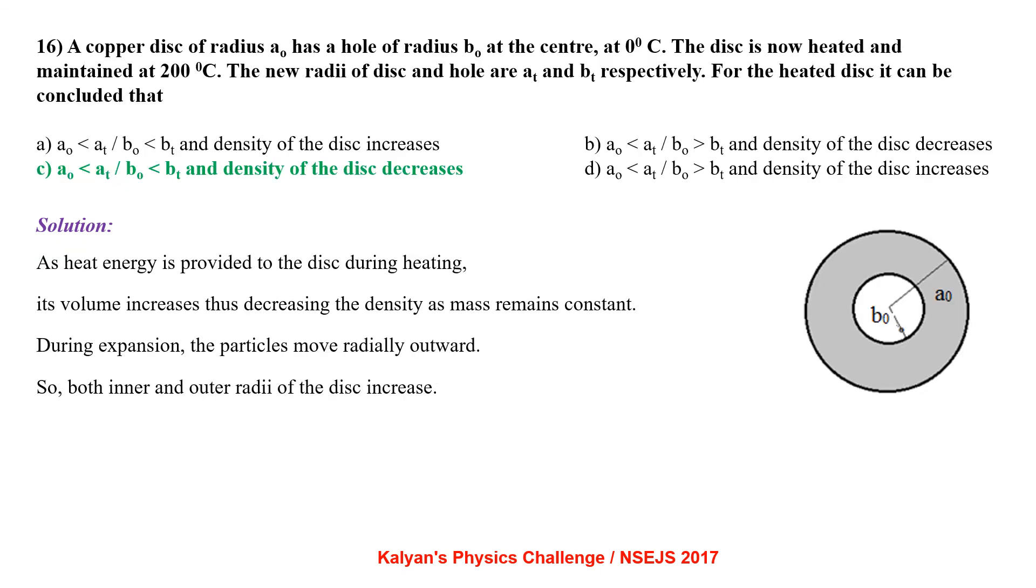A copper disk of radius A0 has a hole of radius B0 at the center at 0 degree centigrade. The disk is now heated and maintained at 200 degree centigrade. The new radii of the disk and the hole are AT and BT respectively. For the heated disk it can be concluded that